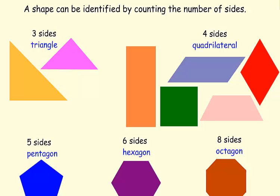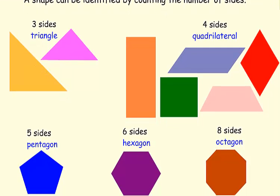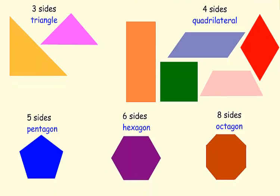We classify our polygons by the number of sides that they have. So into your notes if you'll put an example or just write down what each one means. For example, a triangle has three sides. A quadrilateral has four sides. A pentagon has five sides. And a hexagon has six sides. An octagon has eight sides.